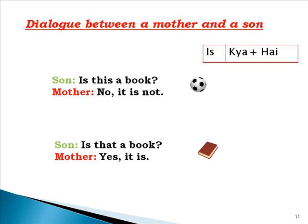Here I have given a dialogue between a mother and a son. When 'is' is written first in a sentence, the meaning of 'kya' (what/is) and 'hai' blends into it. So 'Is this a book?' means 'Kya yeh kitaab hai?' — you don't need to write 'is' again separately. Is this a book? No, it is not. Is that a book? Kya woh book hai? Yes, it is. I hope it is clear.